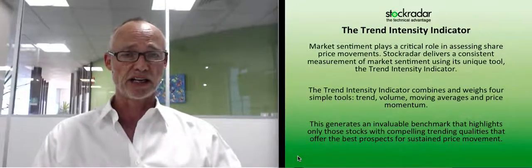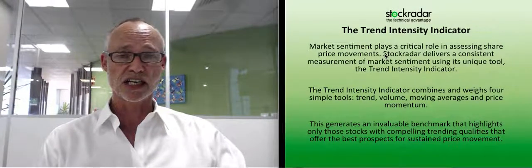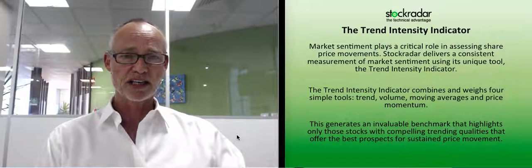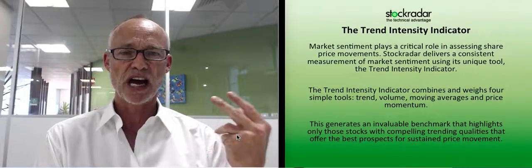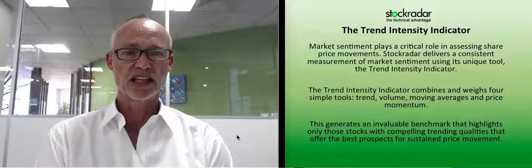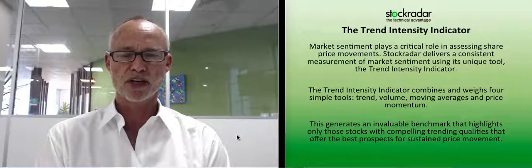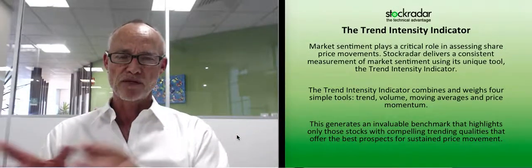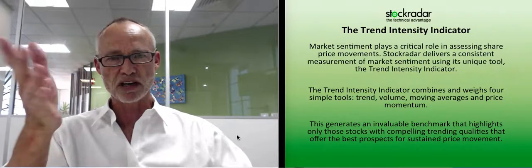So first off, the Trend Intensity Indicator: market sentiment plays a critical role in assessing share price movements. StockRadar delivers a consistent measurement of market sentiment using its unique tool, the Trend Intensity Indicator. It combines and weighs four simple tools: trend, volume, moving averages, and price momentum. This generates an invaluable benchmark that highlights only those stocks with compelling trending qualities and the best prospects for sustained price movement. I work on probabilities all the time — this is more likely to happen than that — and if you work those probabilities, you will make profits. Everything I do has probabilities built into it, and the Trend Intensity Indicator is exactly the same.